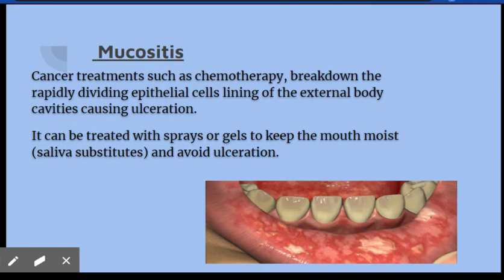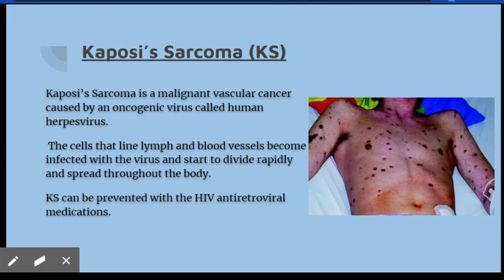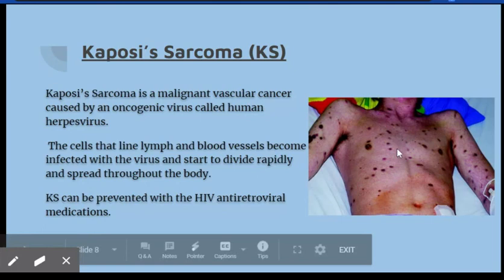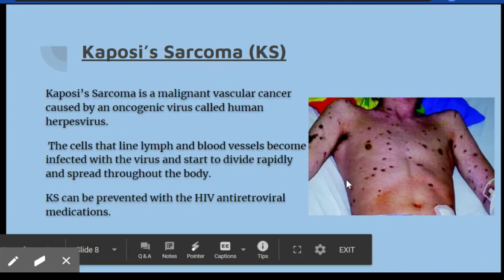Kaposi's sarcoma is a malignant vascular cancer caused by an oncogenic virus called the human herpes virus. It affects the lymph and blood vessel cells, which get infected and start to divide rapidly and spread throughout the body. One of the signs you can see are lesions or spots on the skin that can appear brown or purple, and they can also happen internally. This condition can be treated with antiretroviral medication.